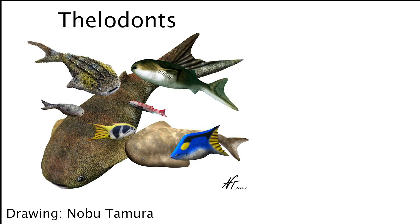In my project I analyze fossil scales of an extinct group of fish called thelodonts. They were so primitive they didn't even have jaws or any other bony skeleton. So we call them jawless fish or agnatha.